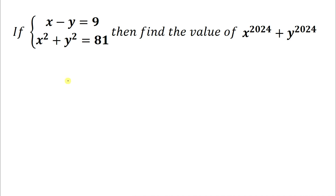Hello everyone, welcome to Root 2 Mathematics. In this video I am going to solve this algebraic equation. We have given: if x minus y equals 9 and x squared plus y squared equals 81, then find the value of x to the power 2024 plus y to the power 2024. We have two equations and we are asked to find the value of this given expression.